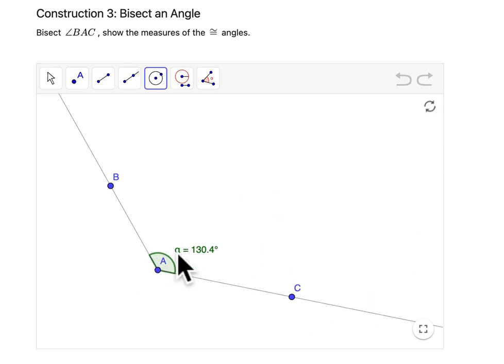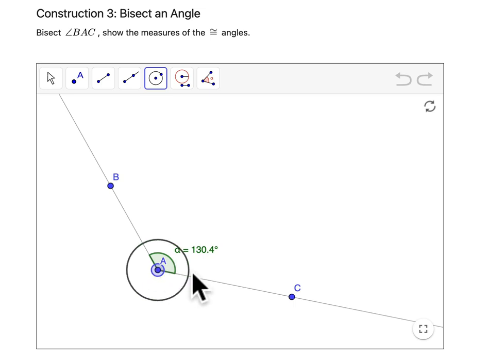Our goal here is to bisect this angle A, and we've got some tools here on GeoGebra to do just that. First, I'm going to click on Circle with a Center through Point. So here's the center at A, and I can expand this out to get a circle.